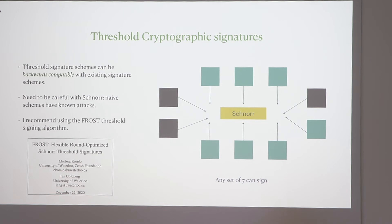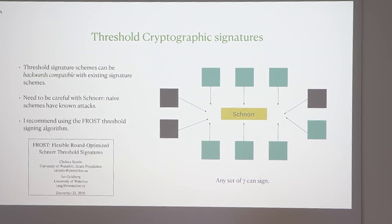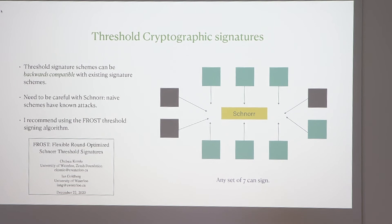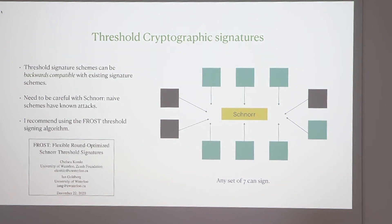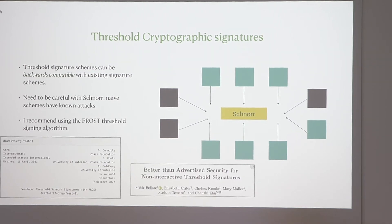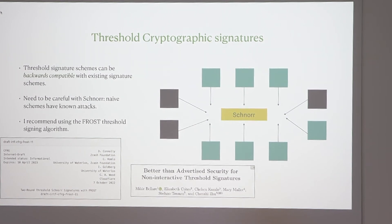If you want to not be susceptible to this attack there are ways around it. In particular there is the FROST threshold signing algorithm, which was designed specifically to get around this attack, and there are security arguments as to why we think it is not susceptible. One of the security proofs is by myself, so I'm certainly biased, but I believe that it is secure.